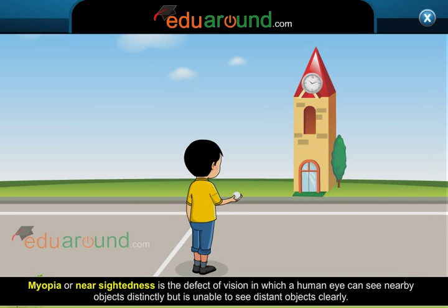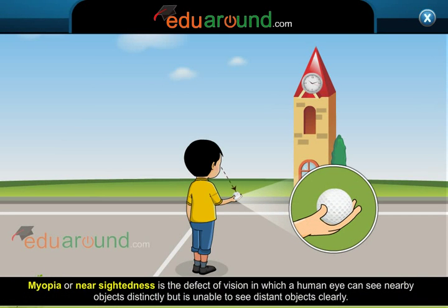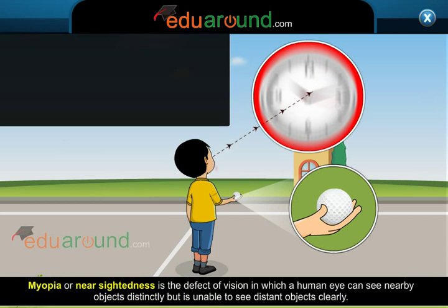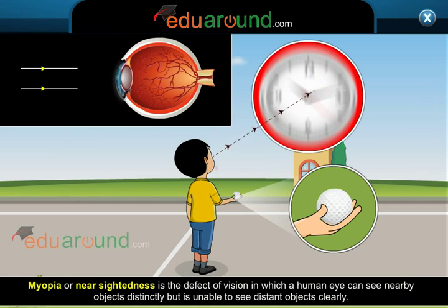Myopia or nearsightedness is the defect of vision in which a human eye can see nearby objects distinctly but is unable to see distant objects clearly.